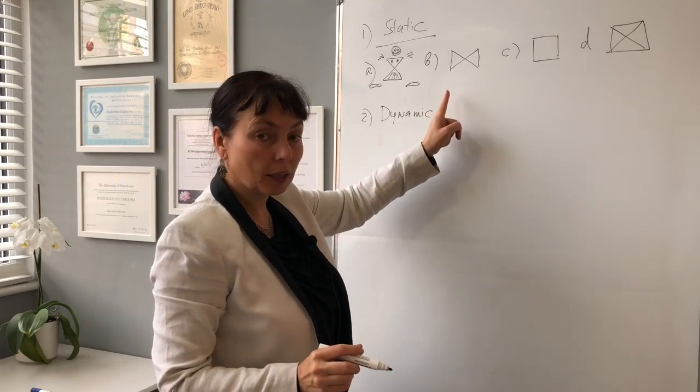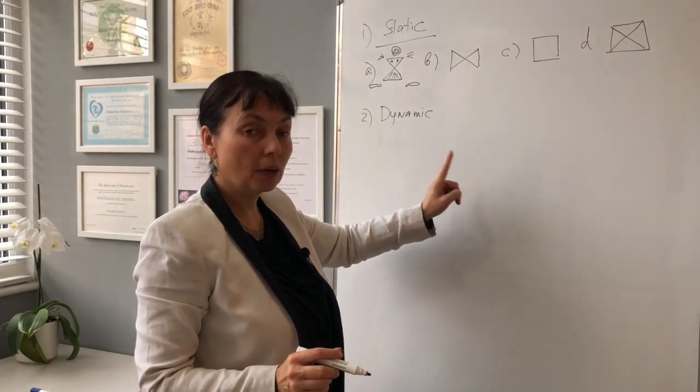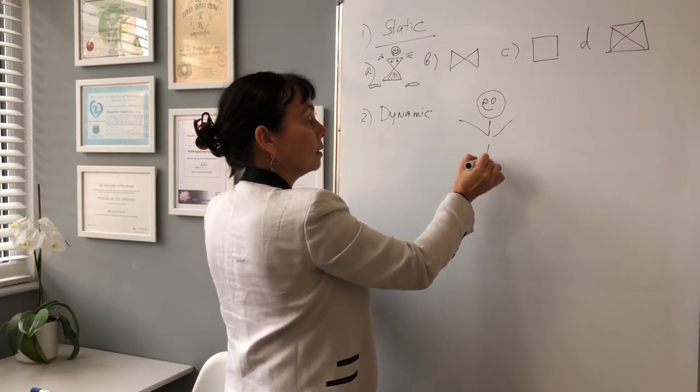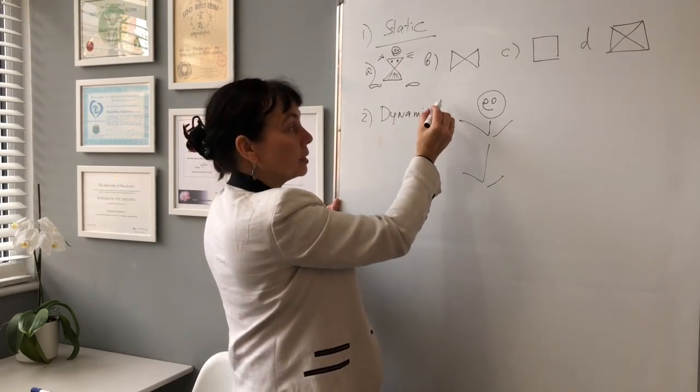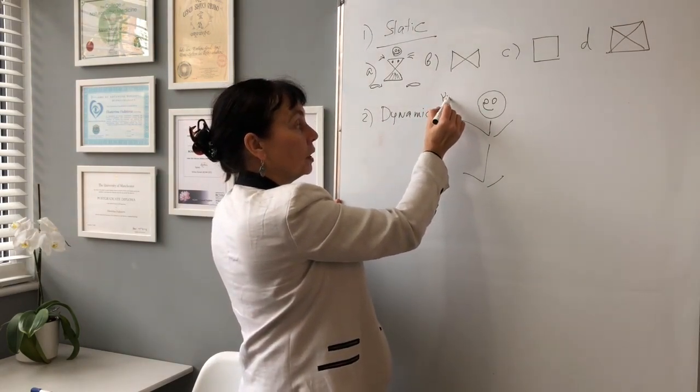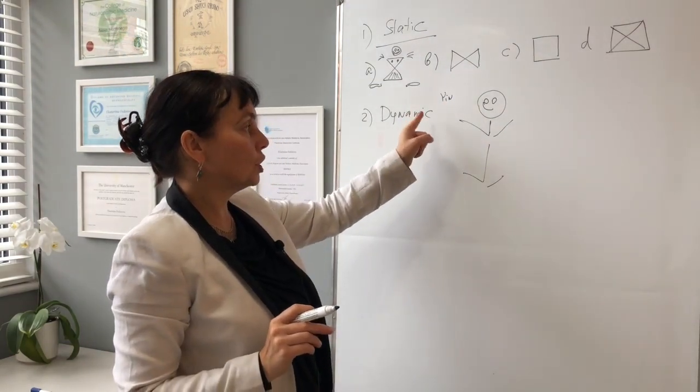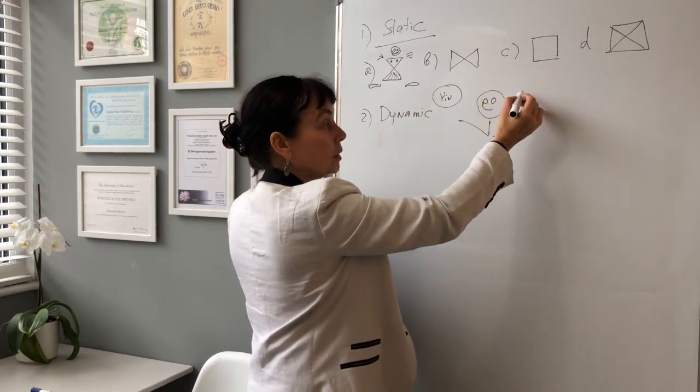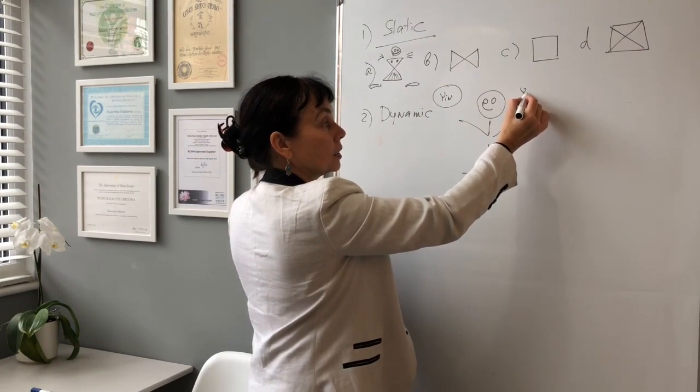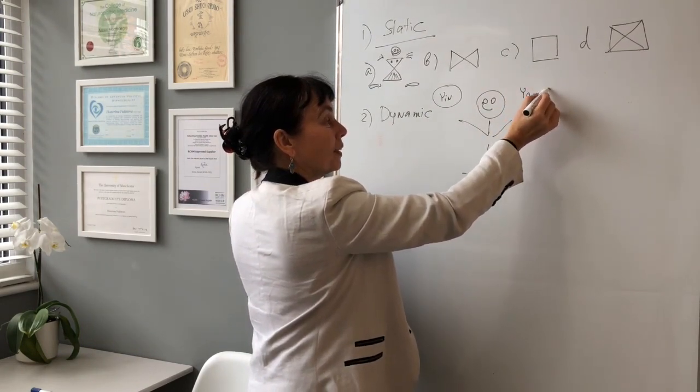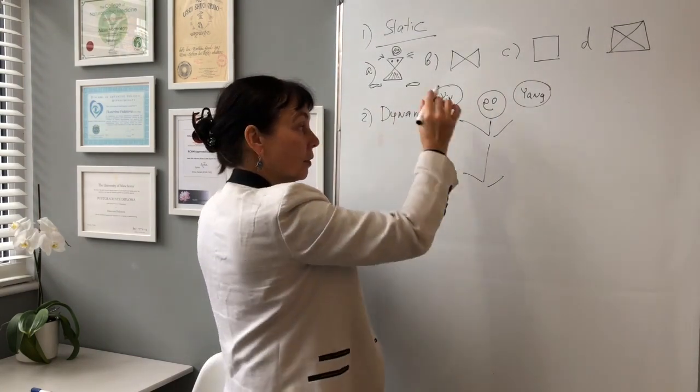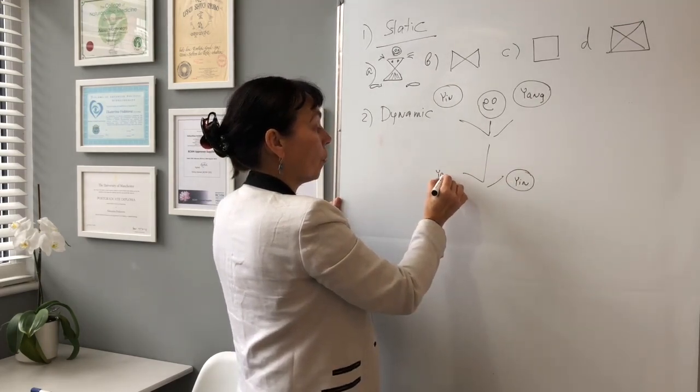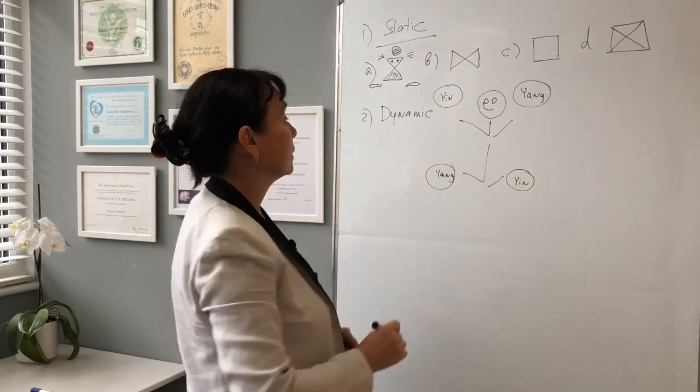So channels must be changed like yin, yang, yin, yang. It means that if one hand will be needled, if in one hand we choose yin channels only and this is what we have to do to needle, so this hand or arm will be for yang channels only. Then the leg will be for yin channels and another leg for yang channels.